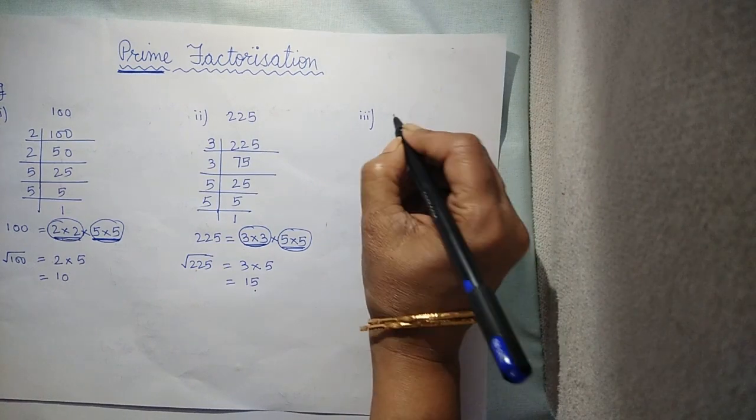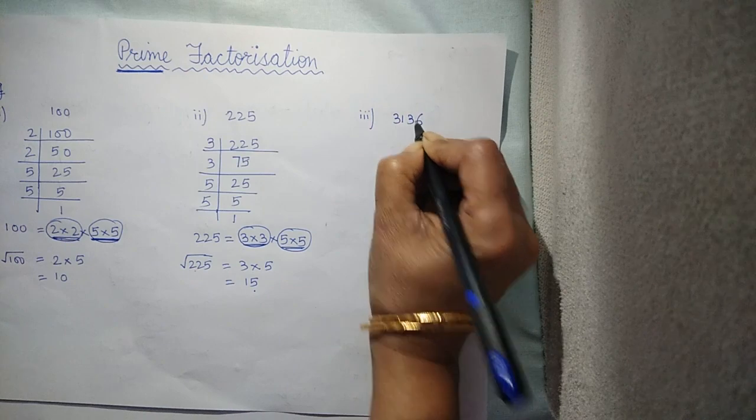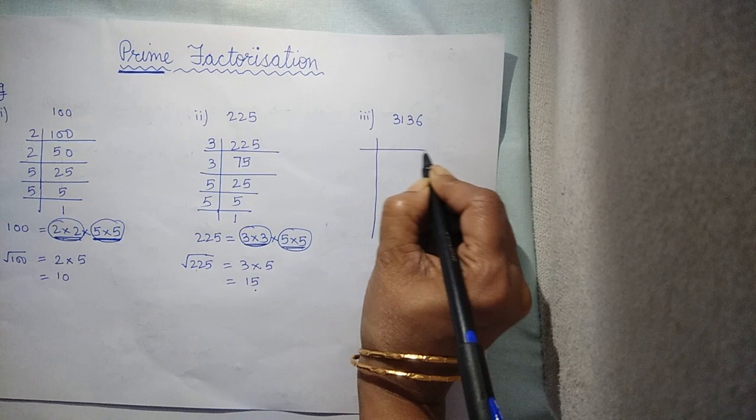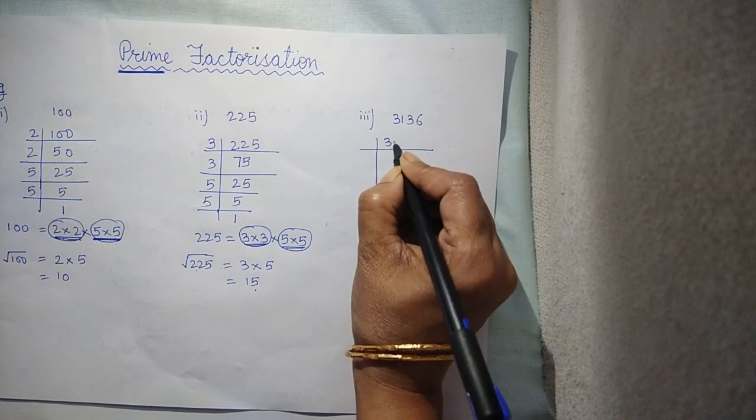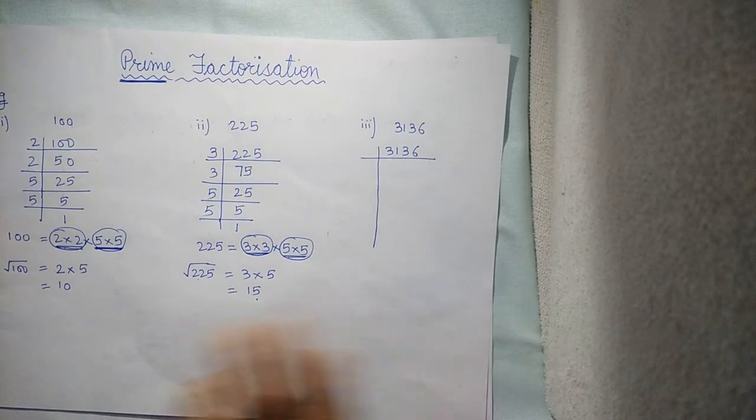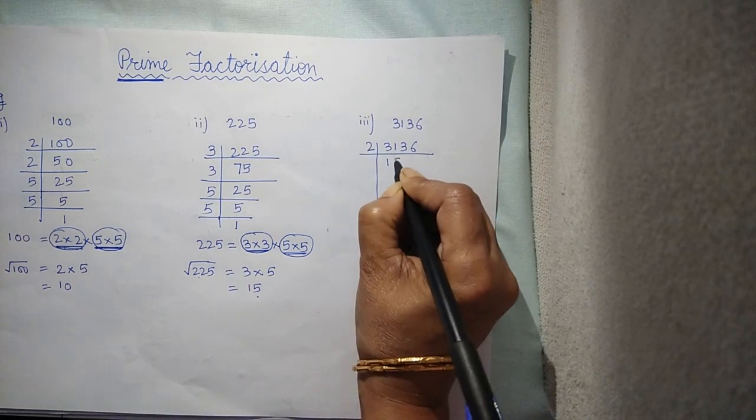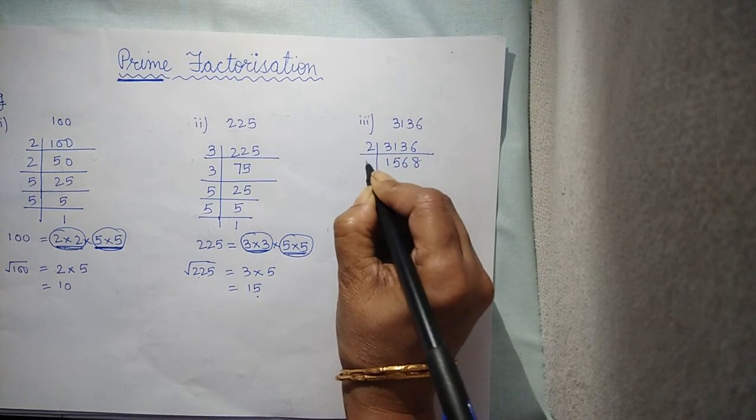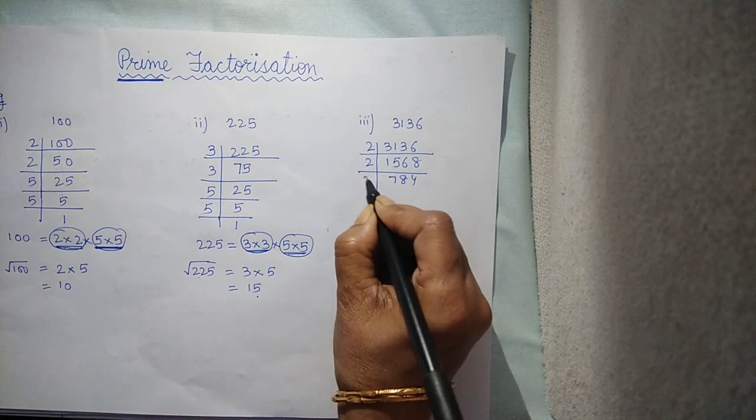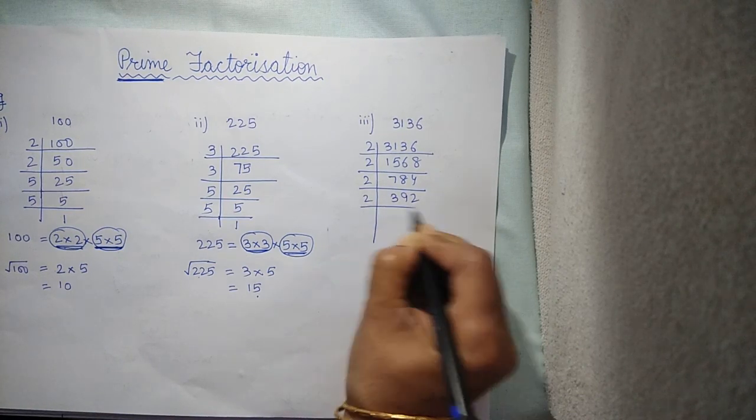Let's take one more example so that it is understandable to all of you. Again, the example is, let's take the number as 3136. I think you can see that this number is a little bit at higher end. Again, do the same procedure. 2 into 1568, 2 into 784. Now, it goes with 2, 392. Again, it goes with 2, 196.